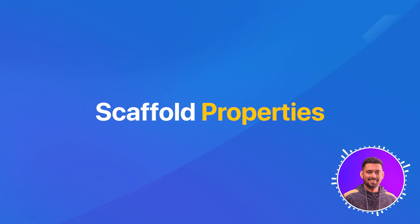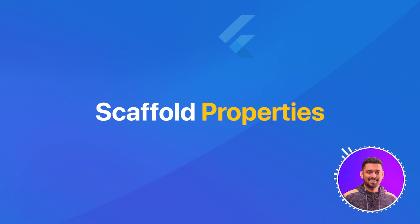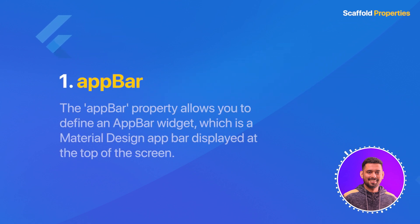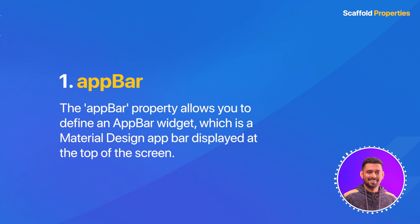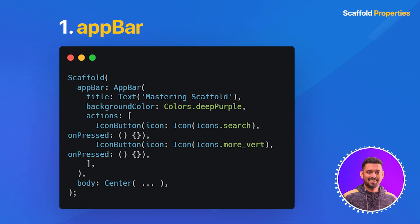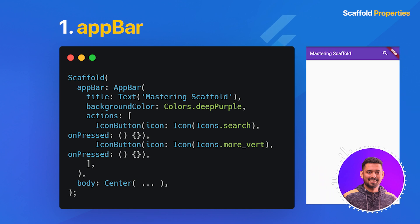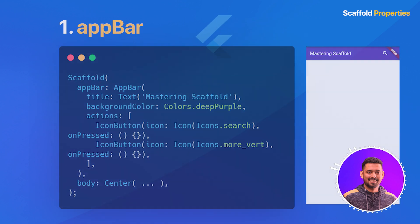Scaffold Properties. Now that we've created a basic Scaffold, let's dive into some of the most important properties and how they can help you build your app. Number one: app bar. The app bar property allows you to define an app bar widget, which is a material design app bar displayed at the top of the screen. In this example, we have customized our app bar with a background color and action buttons.